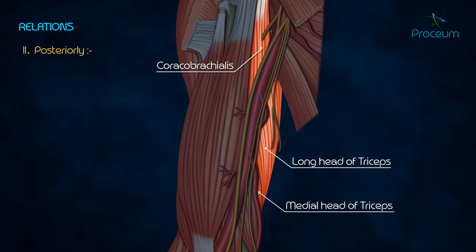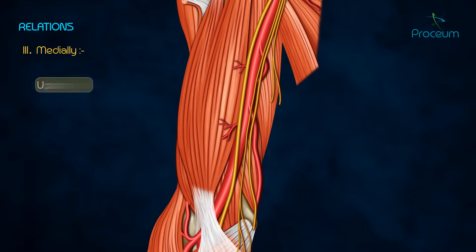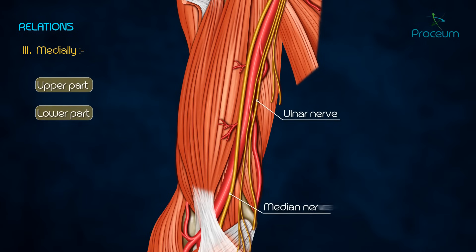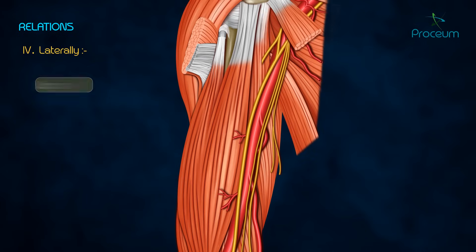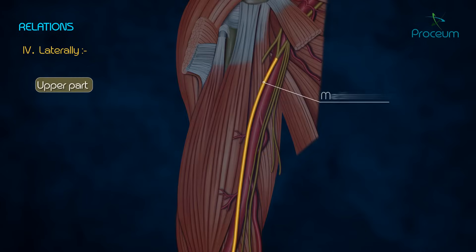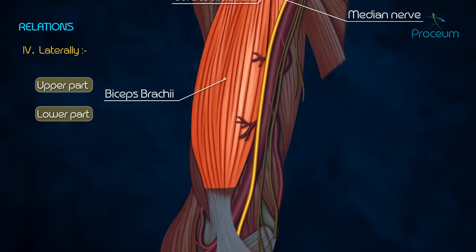Posteriorly it is also related to the coracobrachialis and brachialis muscles. Medially: in the upper part, the ulnar nerve, and in the lower part, the median nerve. Laterally: in the upper part it is in relation with the median nerve, coracobrachialis, and biceps brachii.